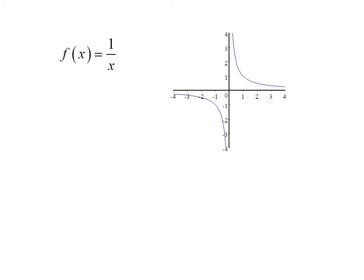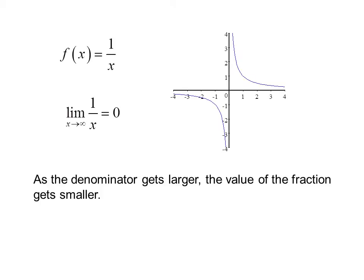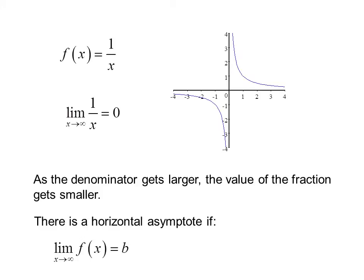Consider the function f of x equals 1 over x. The limit as x approaches infinity of 1 over x equals 0. As the denominator gets larger, the value of the fraction gets smaller. There is a horizontal asymptote if the limit as x goes to infinity of f of x equals a constant b, or the limit as x goes to negative infinity of f of x equals a constant b.